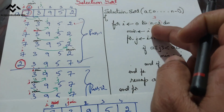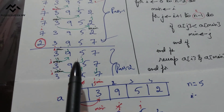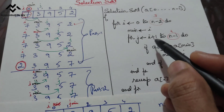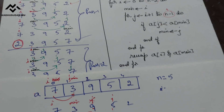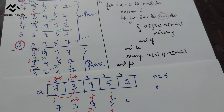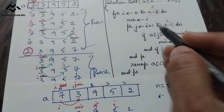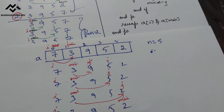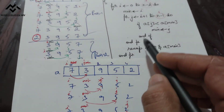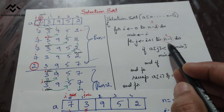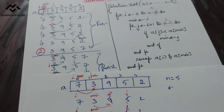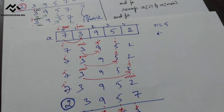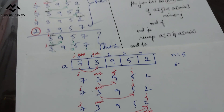Remaining elements are 3 9 5 7. i increments; i becomes 1. 1 is less than or equal to 3, true. Minimum is set to i. j equals i+1=2. We compare a[j] with a[min]: condition is false. j increments; again condition false. j increments again; condition false. j becomes 5, which is false — exit loop. Swap a[i] with a[min]: 3 swaps with 3 only. Remaining is 9 5 7.